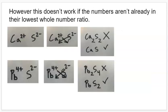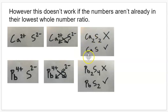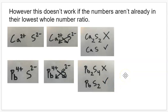Be aware that if the ratio isn't already at its lowest whole-number form, the cross-charge trick won't give the right answer directly. For example, calcium 2+ and sulfur 2−: applying the trick would give Ca₂S₂, which is incorrect — it must be reduced to CaS. Similarly, lead sulfide with 4+ and 2− might appear to give Pb₂S₄, but formula units for ionic compounds are always expressed in the lowest whole-number ratio, so the correct formula is PbS₂. That's all for this topic — see you in the next unit.